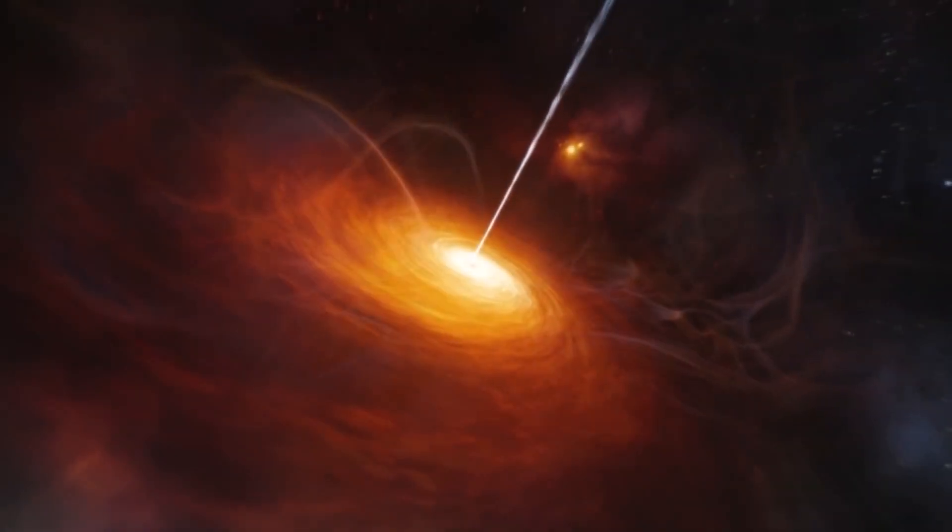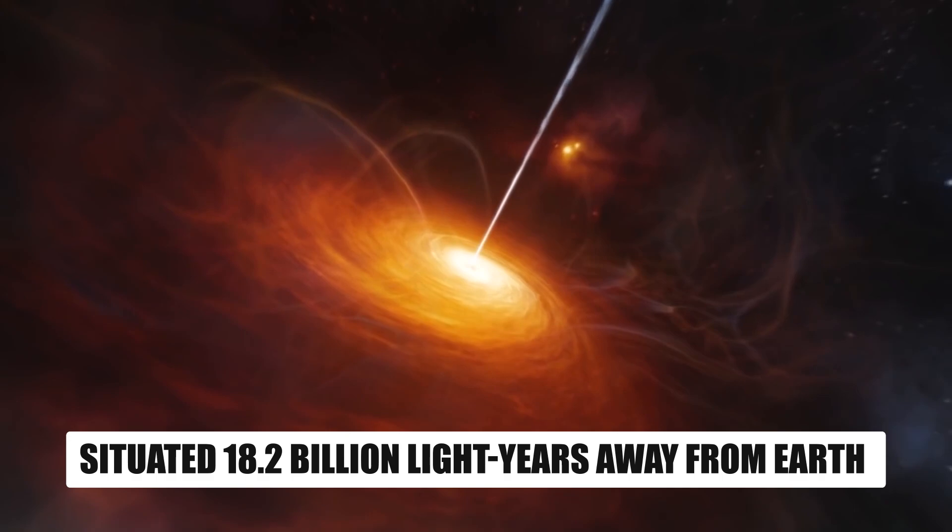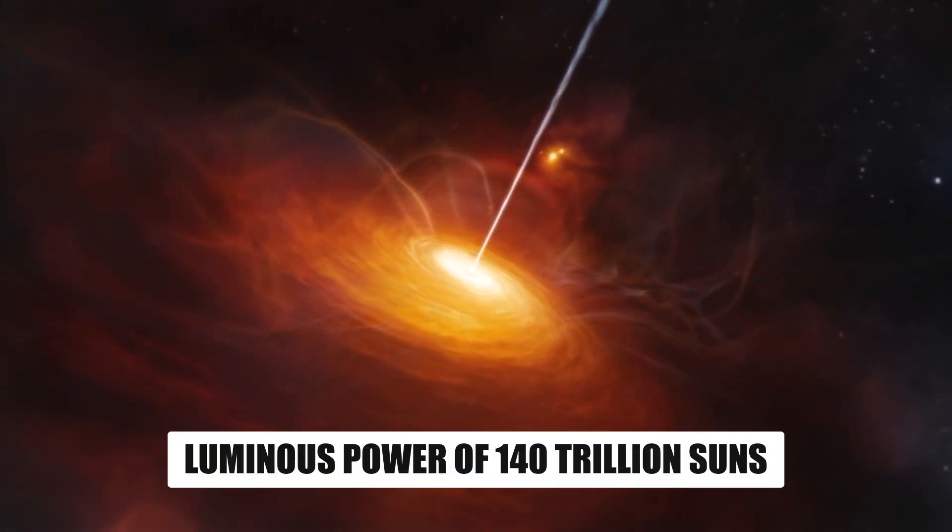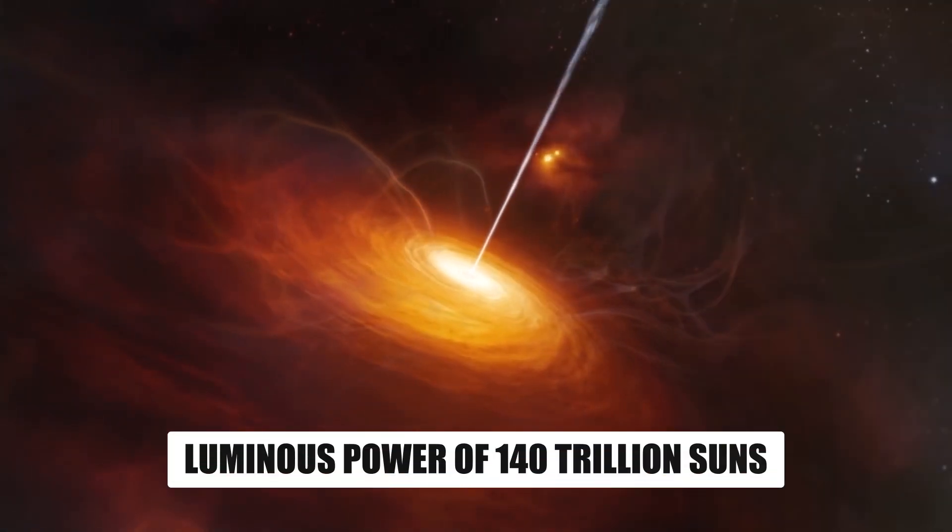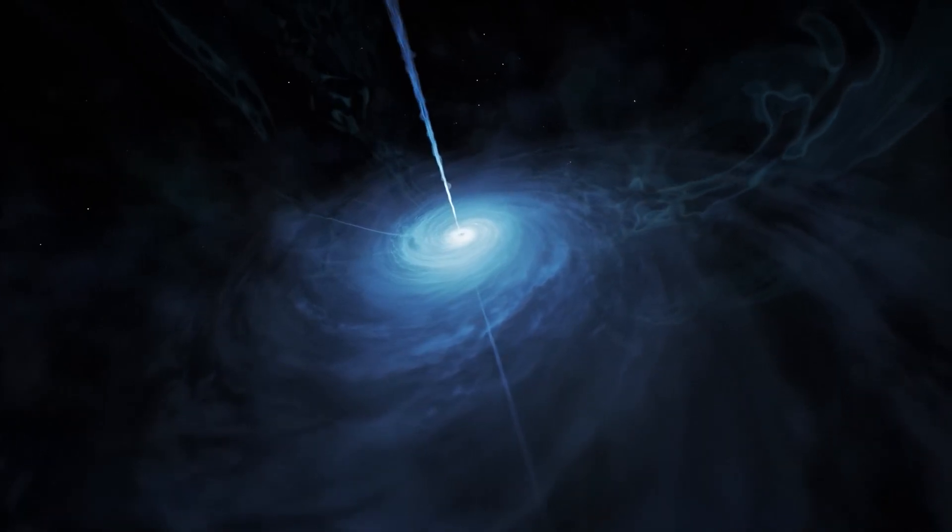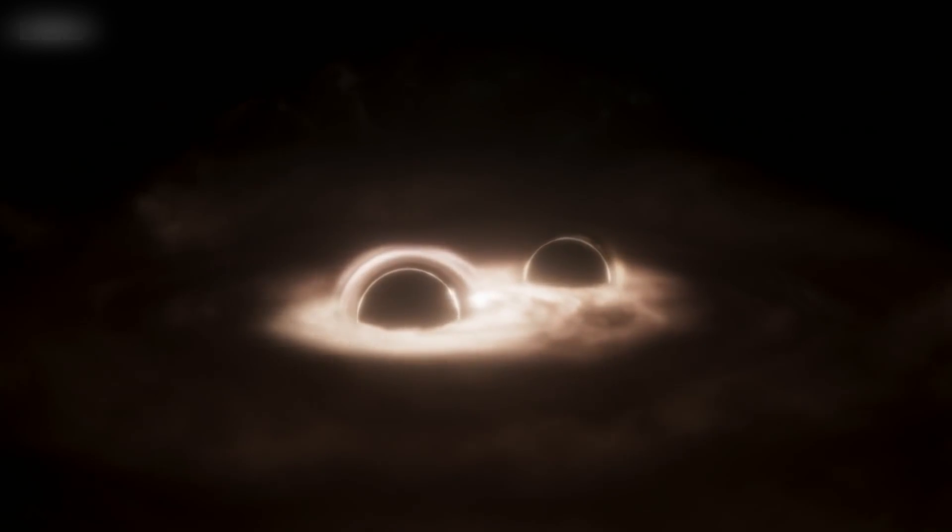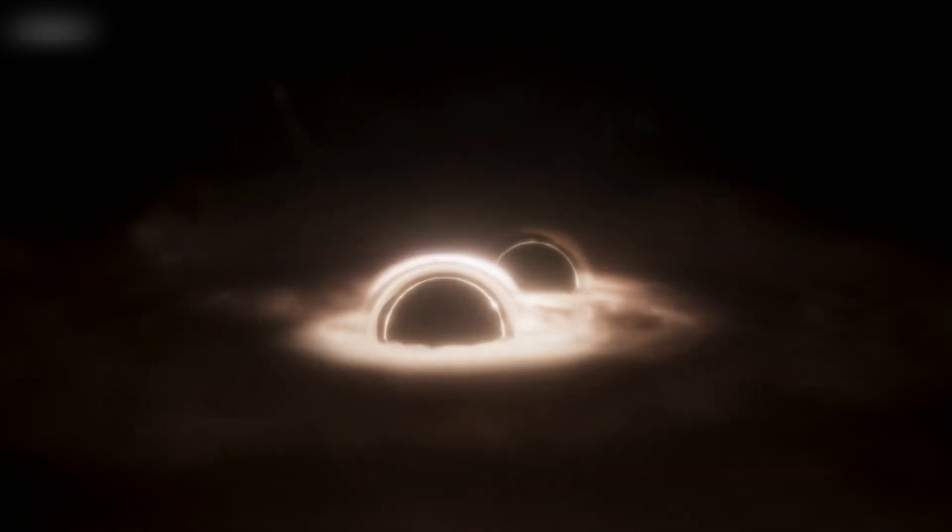TON 618, situated 18.2 billion light-years away from Earth, fuels a quasar, an intensely bright object in the universe, with the luminous power of 140 trillion suns. These quasars are supermassive black holes constantly ingesting material, growing by merging with other black holes and devouring surrounding matter.